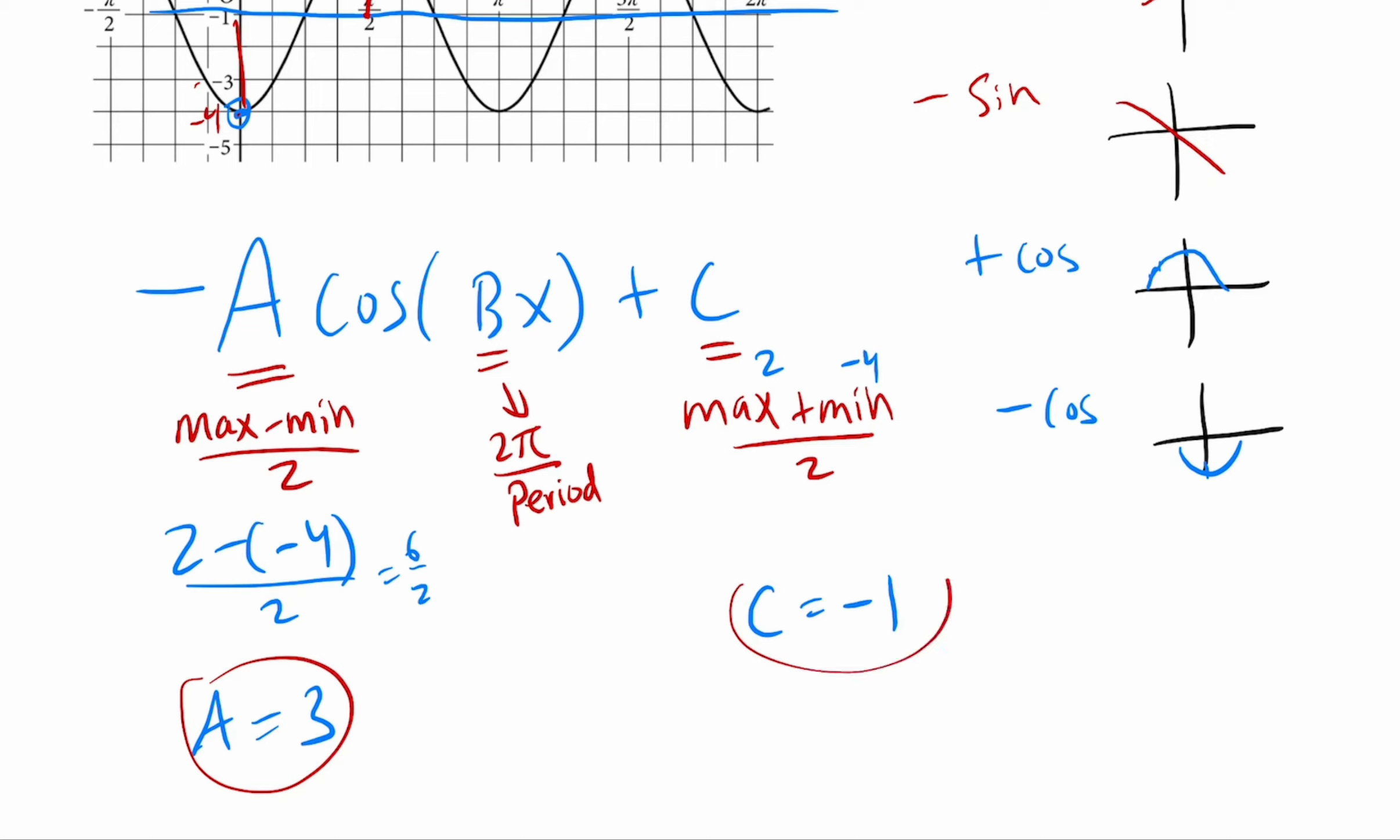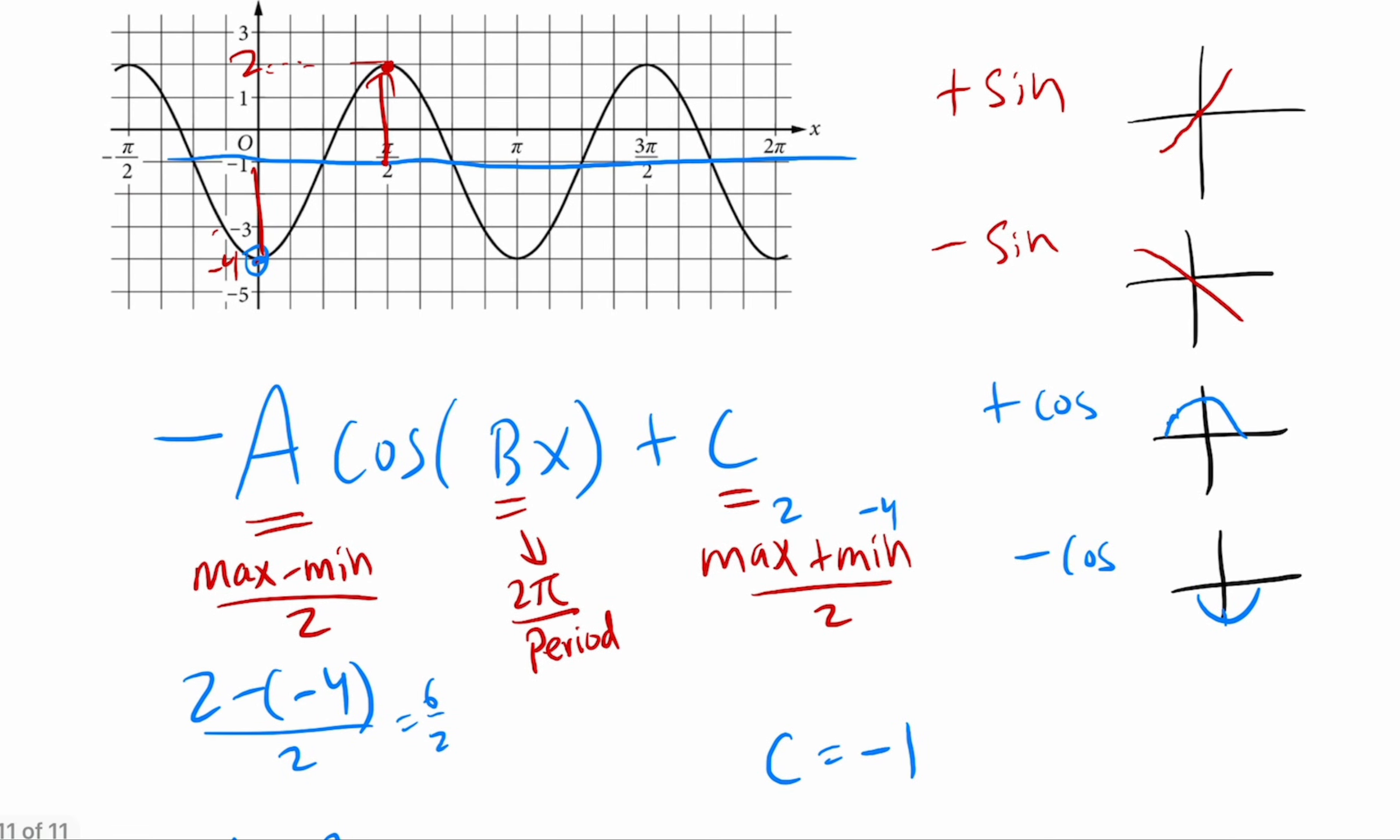So now that we have our A and C, all that's left to do is to figure out the B, which is 2 pi over period, and the period is how often it repeats itself, which you could find by looking at, for example, just the minimums or just the maximums and seeing how much of an x value gap is there between those.